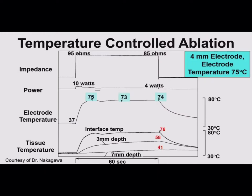A question came up: why does the impedance drop during RF? You're changing the characteristics of the tissue. The tissue has cells with water, and you're essentially drying out the cells and creating fibrosis, which will decrease the impedance between the electrode and the tissue interface.